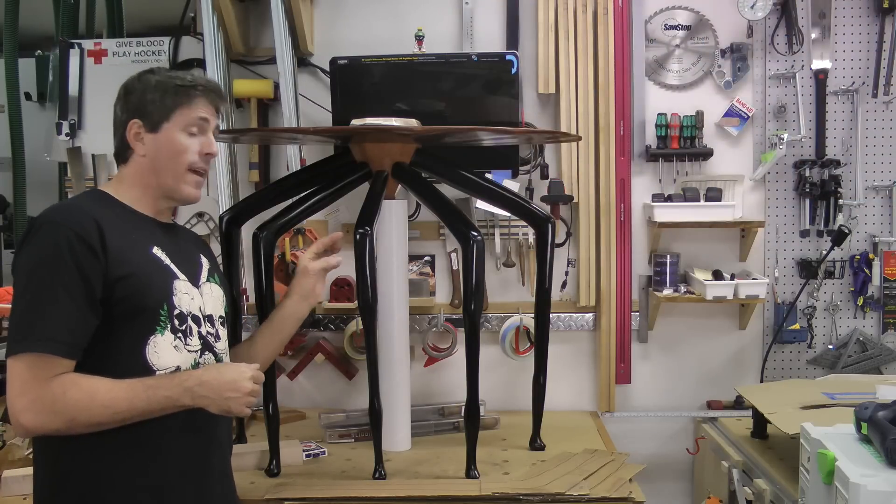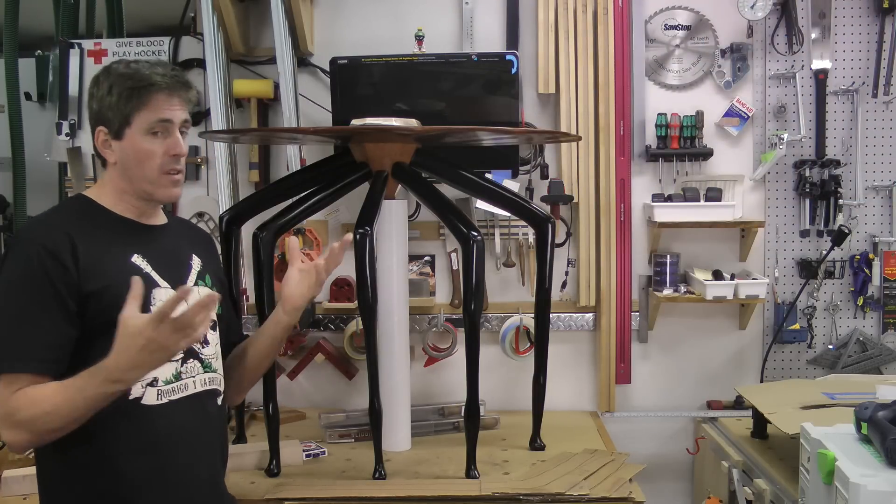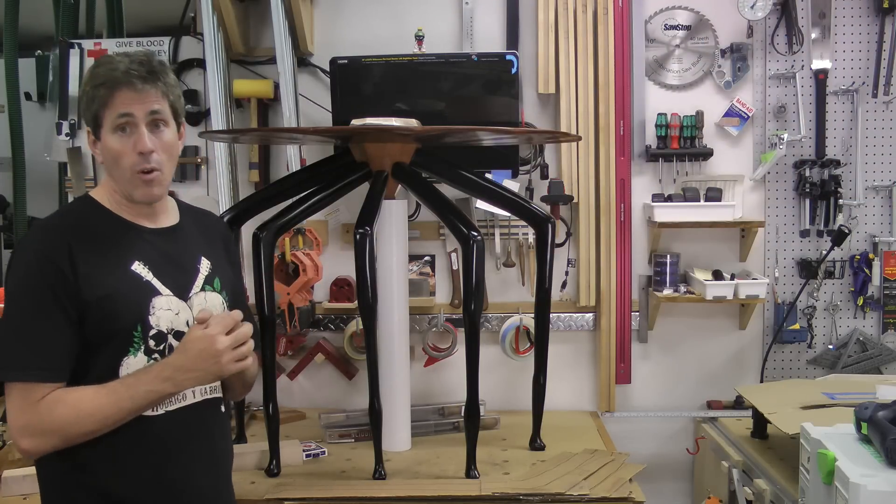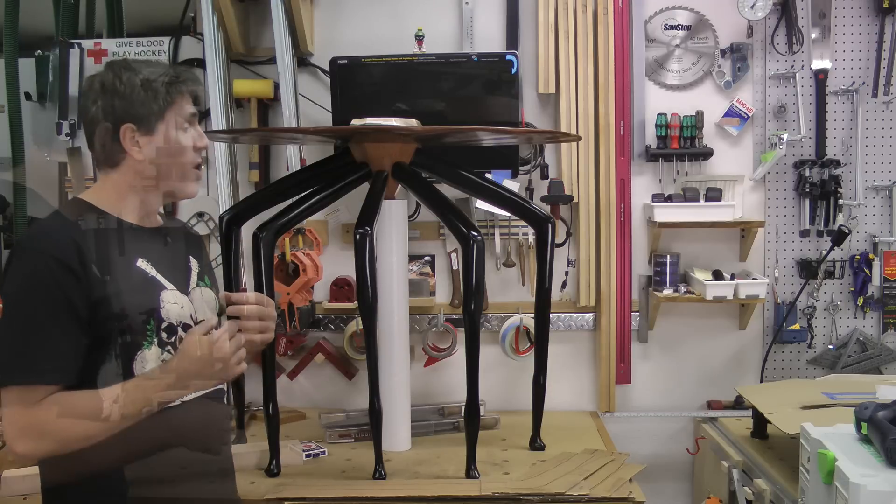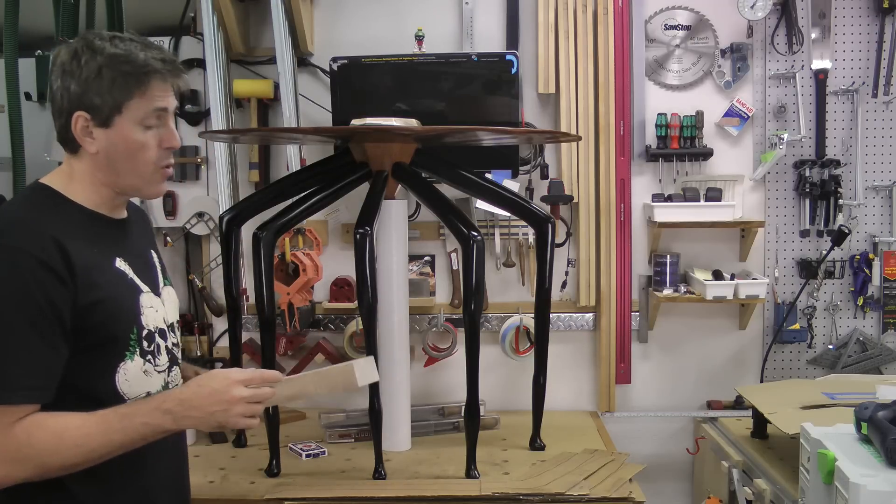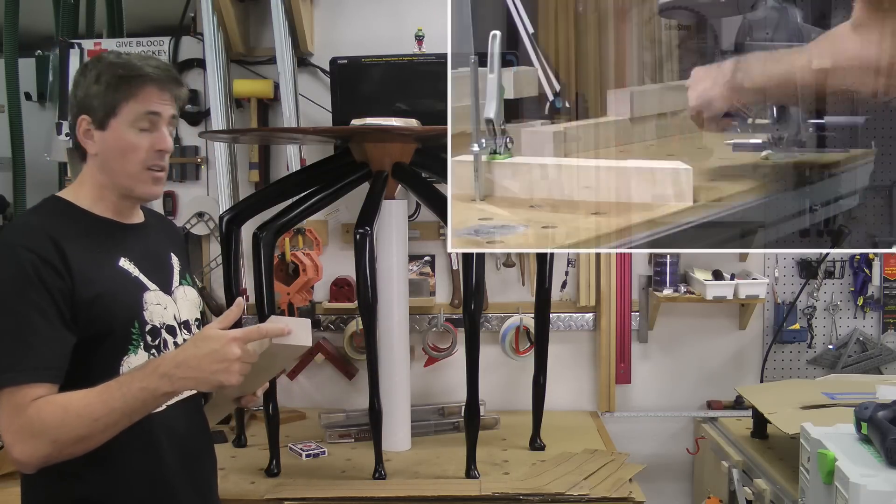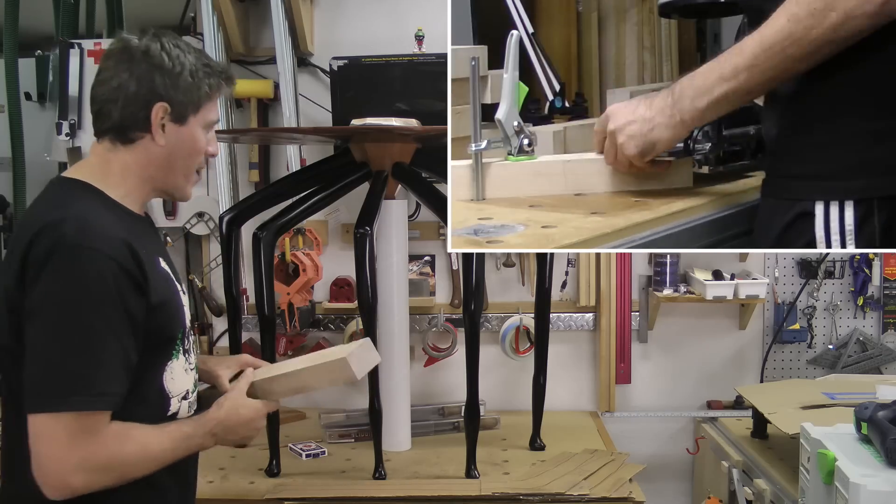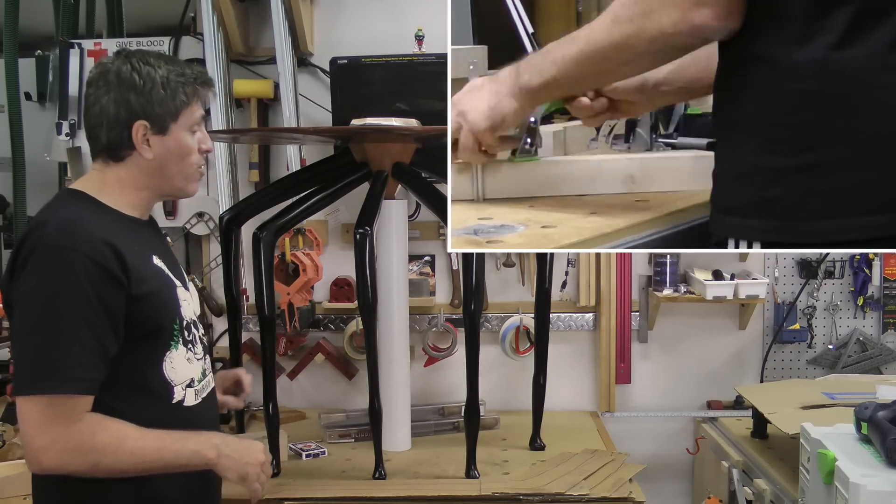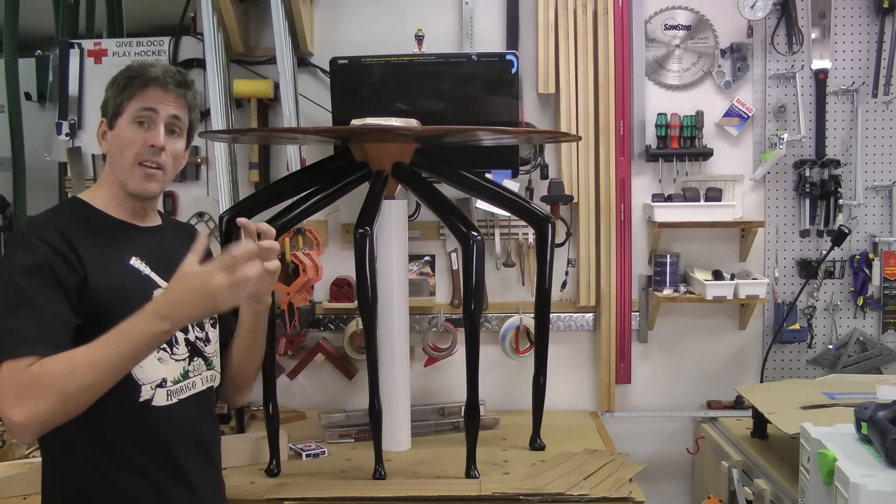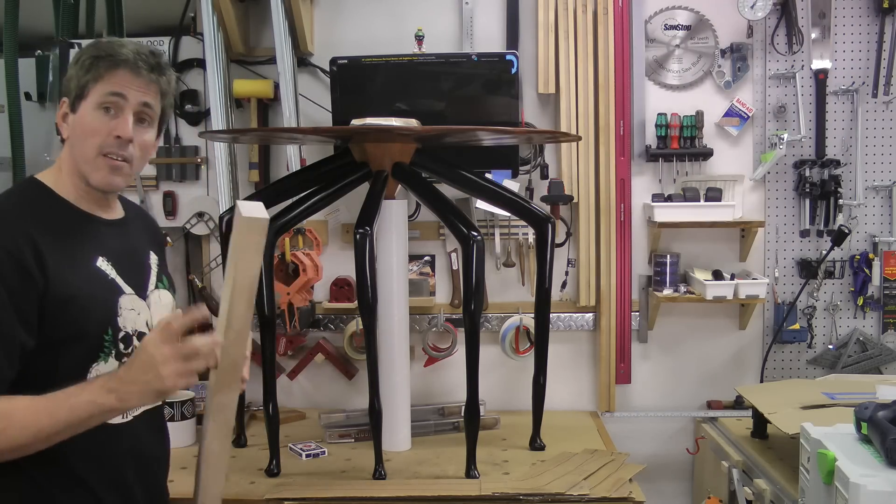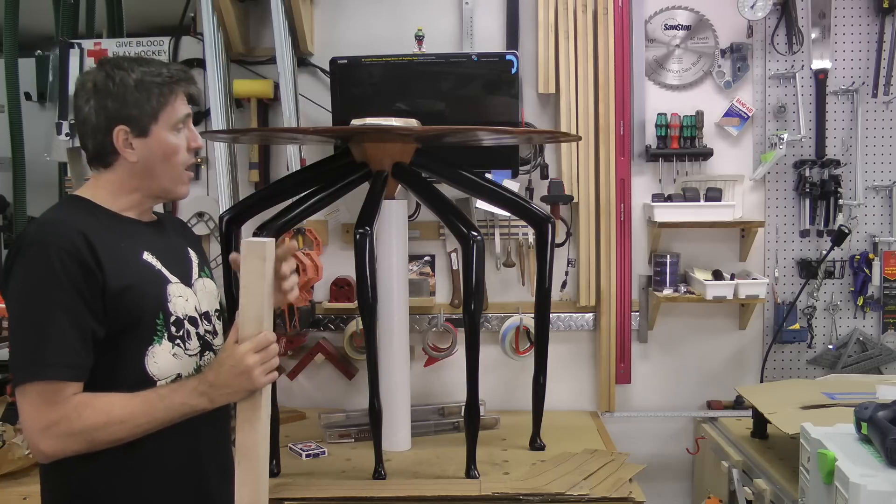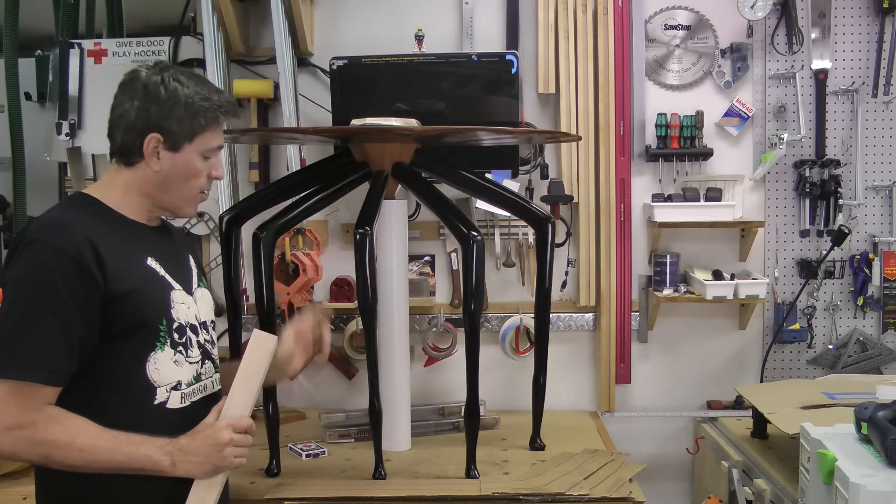Now these joints are all end grain. So it's all end grain to end grain just like any other miter joint. So the last thing I would want to do is trust this just to glue. Which is why while the stock was still square, I placed two dominoes into the joint. So you just have to make some good notes to know exactly where they are so you don't expose them later. The reason for putting two in there is because it's going to help resist any twists that might happen.